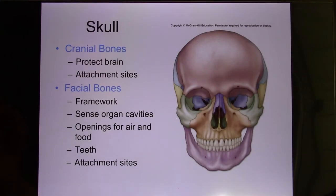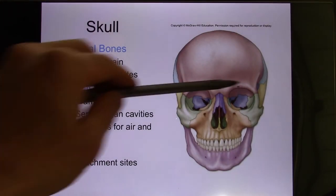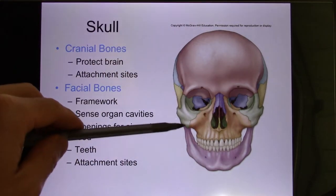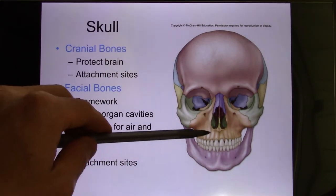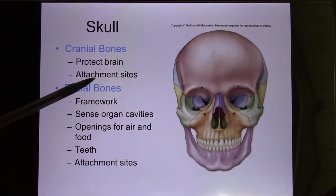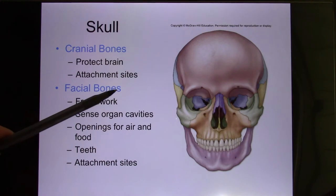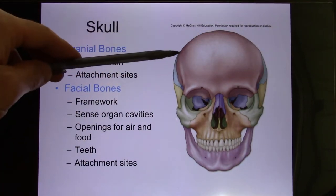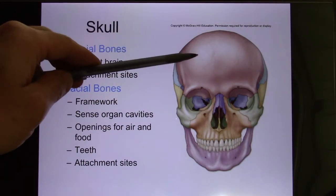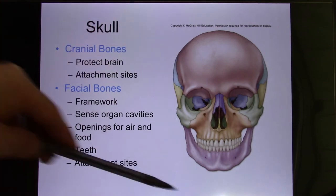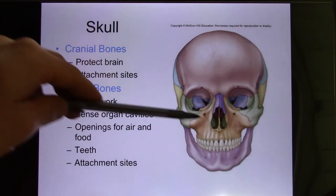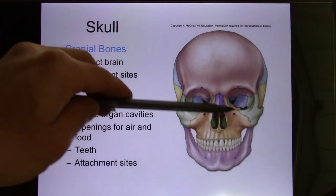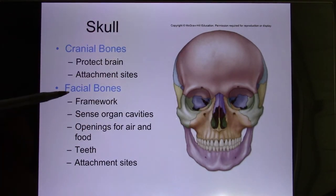The skull is made of cranial bones and facial bones. Facial bones are much weaker than the cranial bones. The cranial bone's main function is protecting the brain, so most of them are flat bones. Facial bones function to create your face, so most of them are irregular bones.